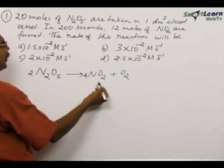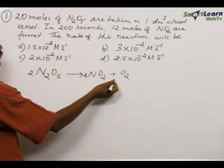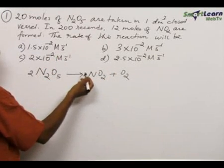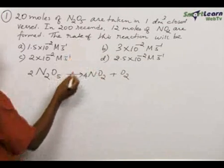NO2 is one of the products. The rate can be calculated with respect to either the reactant or product. Here the NO2 formation is given: 12 moles of NO2 are formed in 200 seconds.